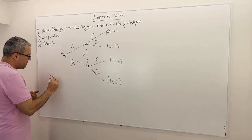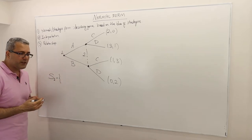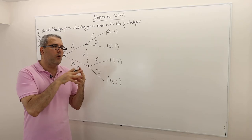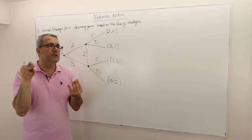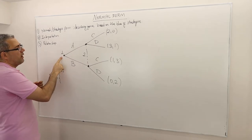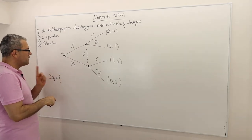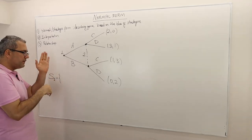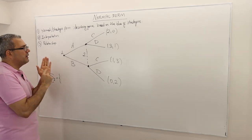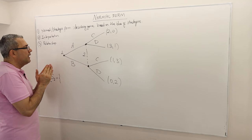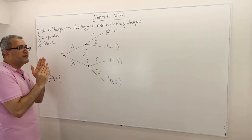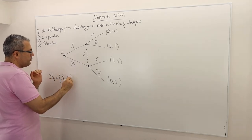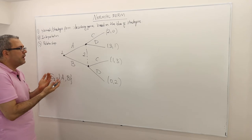The strategy space for player one — remember, a strategy is a complete contingency plan, meaning it maps all the decision nodes of that player to an action. Player one has only one decision node with two available actions, so he has two strategies: he can either choose A or choose B. So actions and strategies are essentially the same thing for player one.